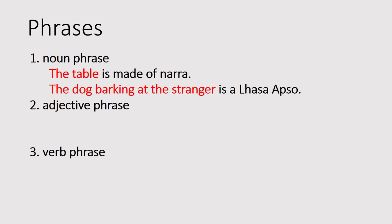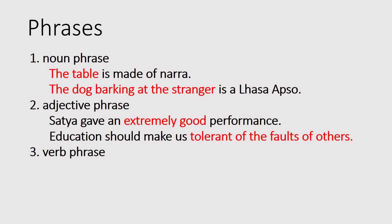The next one is the adjective phrase, which consists of the main adjective and its pre-modifiers. Example: 'Satya gave an extremely good performance.' You have the main adjective 'good' and an adverb 'extremely' that intensifies it. Or: 'Education should make us tolerant of the faults of others.' Here 'tolerant' is the main adjective followed by the complement 'of the faults of others,' which is a prepositional phrase.